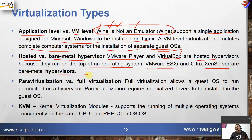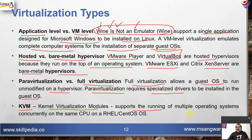Para-virtualization versus full virtualization: full virtualization allows a guest operating system to run unmodified on a hypervisor. Para-virtualization requires specialized drivers to be installed in the guest operating system. KVM (kernel virtualization modules) supports running multiple operating systems concurrently on the same CPU on RHEL or CentOS-based systems.